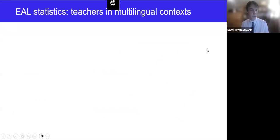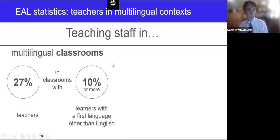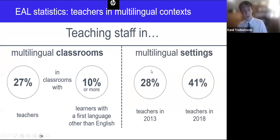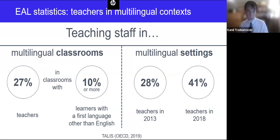One more slide on numbers — from the OECD Teaching and Learning International Survey, TALIS. They found in 2018 that 27% of teachers in England worked in classrooms where at least 10% of pupils had a first language different from the language of instruction. Nearly half of all teachers teach in diverse classrooms, as the share of teachers working in multilingual settings increased by 14%, from 28% in 2013 to 41% in 2018. This need to focus on supporting learners using EAL is therefore great, and by developing this course, we hope to support school staff in supporting multilingual learners.